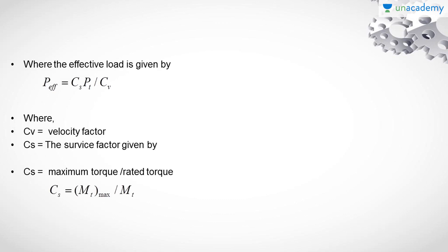The effective load is given by P_effective equals CS into PD divided by CV, where CS is the service factor and PD is the tangential component of the force acting on the gear tooth, and CV is the velocity factor. The service factor is given by CS equals maximum torque by rated torque, that is MT_max by MT. With the help of these equations we are going to find the value of module which is the safest value that can resist the breaking loads acting on the gear tooth.